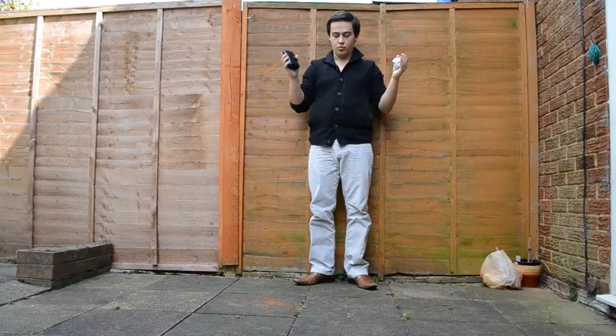To do this, I have an old wallet, filled with loose change, and a piece of paper. Now, because the wind and air resistance can affect this, we crumple up the paper to reduce its air resistance. So now it has a similar shape to the wallet. And in three, two, one...